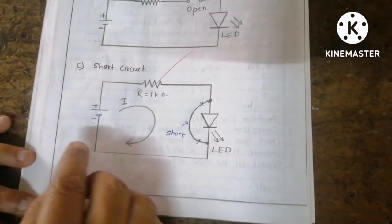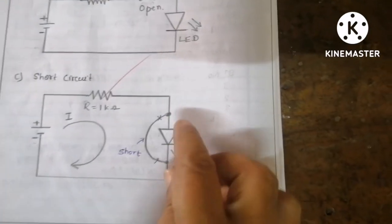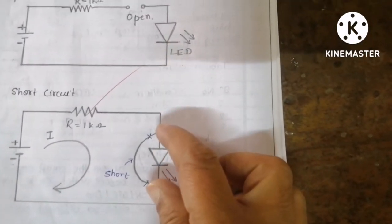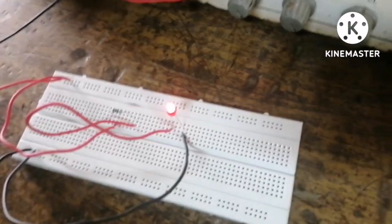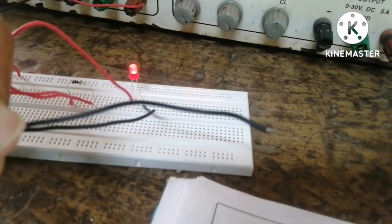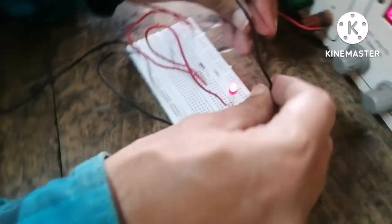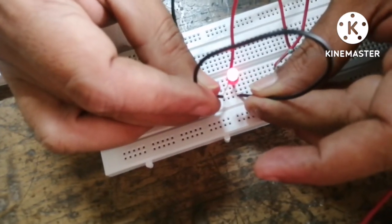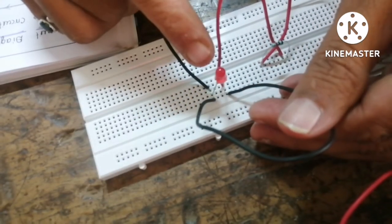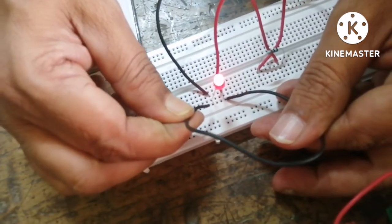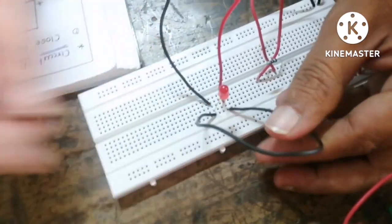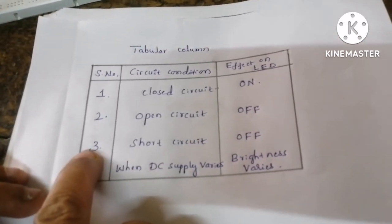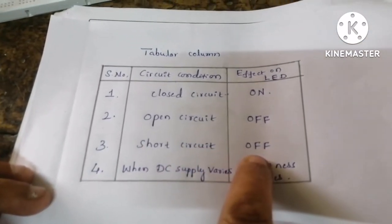Now let us study the short circuit. What I should do is take one piece of wire and short both legs of the LED. I will show you experimentally. I am taking a wire and shorting both legs of the LED — one leg here, and I have just shorted the other. You can see the LED is off condition. If I remove the wire, the LED is on. If I short, the LED is off. In the tabular column also it is clearly written — serial number three, short circuit, LED is off.